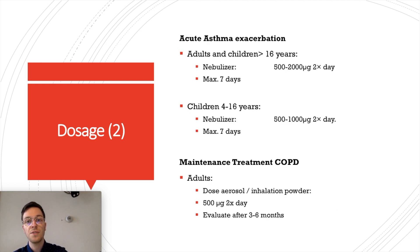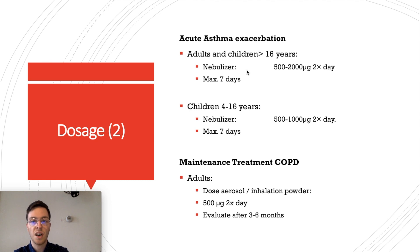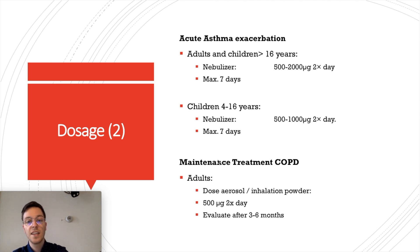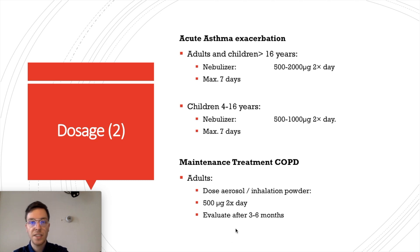For treating acute asthma exacerbations in adults or children older than 16 years, always use a nebulizer. You can use 500 to 2000 micrograms twice a day, maximally up to 7 days. If you still need it after 7 days, contact your doctor. For children aged 4 to 16 years, use 500 to 1000 micrograms twice a day, again maximally 7 days. For maintenance treatment of COPD in adults, use 500 micrograms twice a day and evaluate after 3 to 6 months to assess sufficient effect.